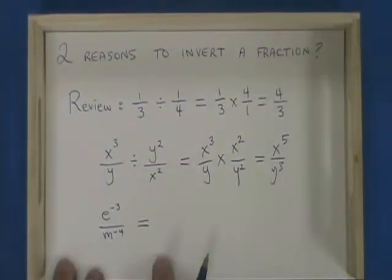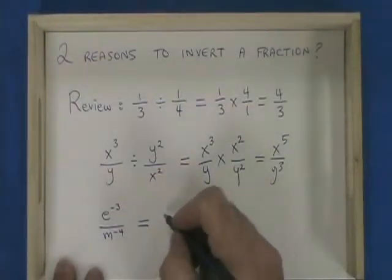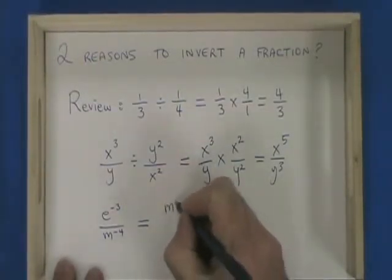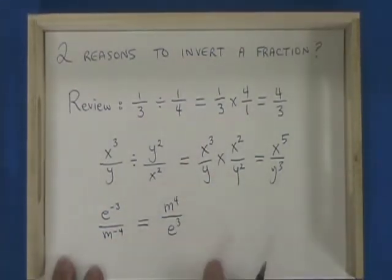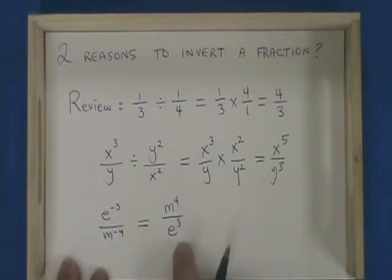But there is a second reason why we can invert a fraction. e to the negative 3 over m to the negative 4 is the same as m to the positive 4 over e to the positive 3. The way that I can recognize that this is the reason I am inverting the fraction is because the signs of the exponents change.